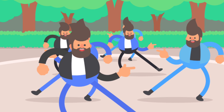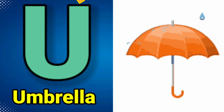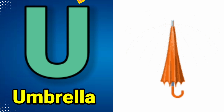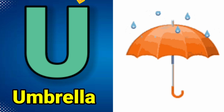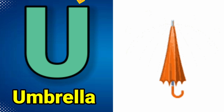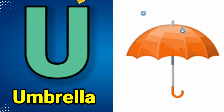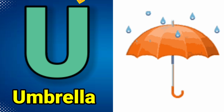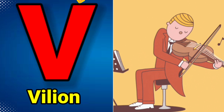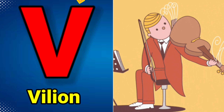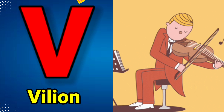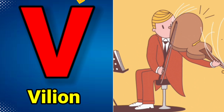U is for Umbrella. U-Umbrella, U-Umbrella, U, Umbrella. V is for Violin. V-V-Violin-V, V-Violin-V.